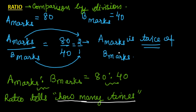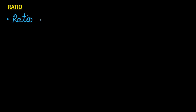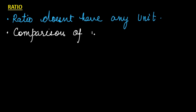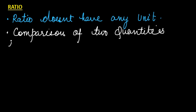Ratio is basically comparison by division. Now, some facts about ratio. The first fact about ratio is that ratio doesn't have any unit. Why? Because ratio is nothing but comparison of two quantities having the same unit.